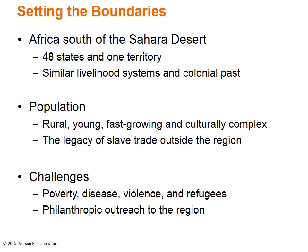The Sub-Saharan Africa region consists of 48 states and one territory situated below the Sahara Desert. This region is bounded together by its similar livelihood systems and colonial past. Practically every country in this region was invaded by European powers and colonized, and many of the state borders today are a direct result from the colonization process. The population is mostly rural, fast-growing, and culturally complex. There is a deep legacy of slave trade, which those taken had experienced forced migration and diffusion, especially to the Americas, in vast numbers. The region faces many challenges today including poverty, disease, violence, and refugees. Many countries outside the region have continuously given assistance through monetary aid and outreach programs. On a positive note, many countries within the region have reduced infant mortality, expanded basic education, and increased food production in the last two decades. One of the most transformational changes has been the rapid diffusion of cell phones in the region.